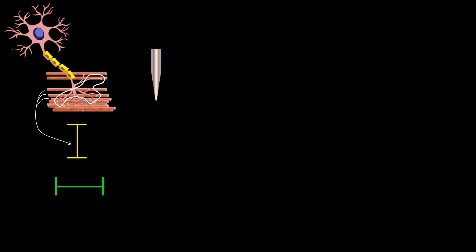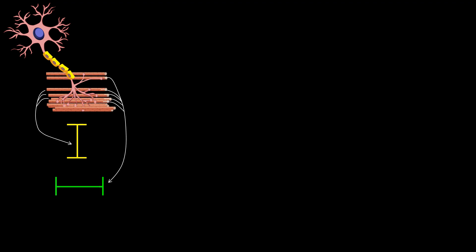Let's say that a monopolar electrode is in the position shown in this frame. The first muscle fiber action potential to reach the uptake area of the electrode is the one with the neuromuscular junction closest to the needle. The last muscle fiber action potential to contribute to the duration is the one originating furthest from the electrode. As we know, more fibers contribute to the duration than to the amplitude of a motor unit potential.